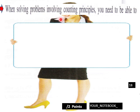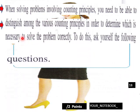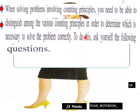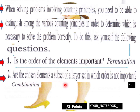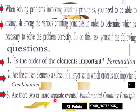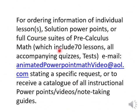When solving problems involving counting principles, you need to be able to distinguish among the various counting principles in order to determine which is necessary to solve the problem correctly. Ask yourself the following questions: Is the order of the elements important? If it is, it's a permutation. Are the chosen elements a subset of a larger set in which order is not important? It's a combination. Are there two or more separate events? Use the fundamental counting principle. So that is 8.5 Part 2, Pre-Calculus Math. If you need classwork, homework, note-taking guides, or any course materials, email me at animatedpowerpointmathvideo at allo.com. Thank you very much.